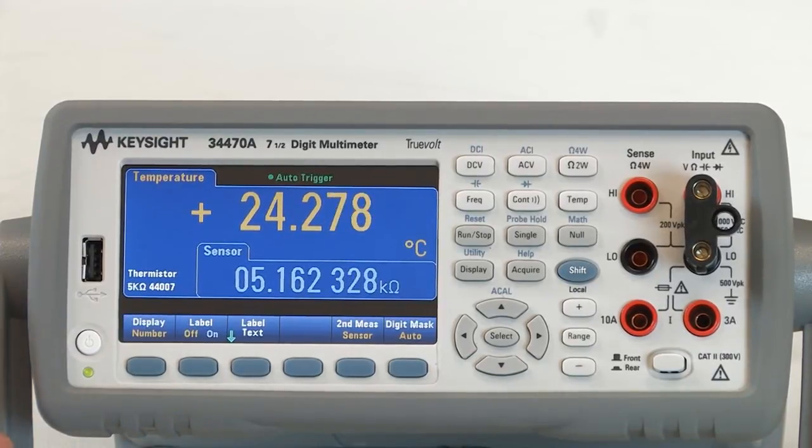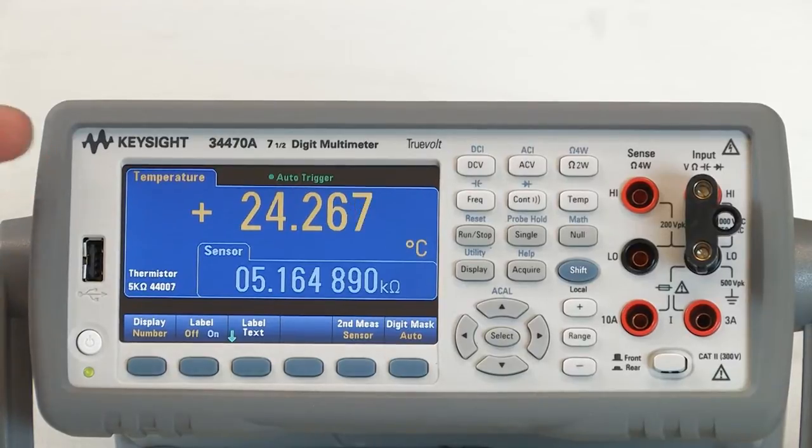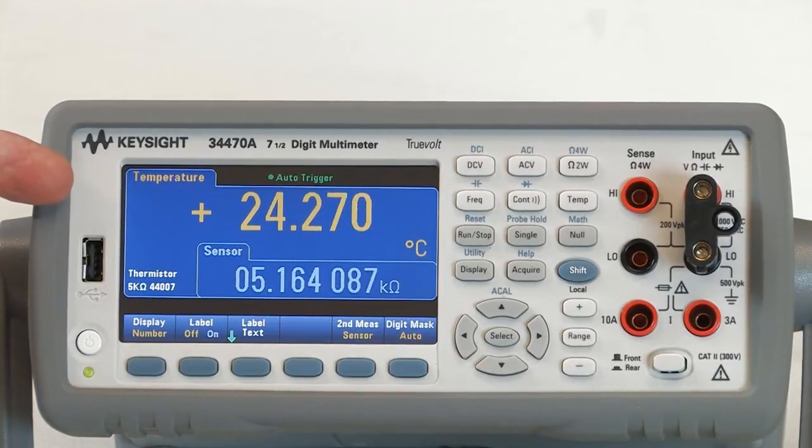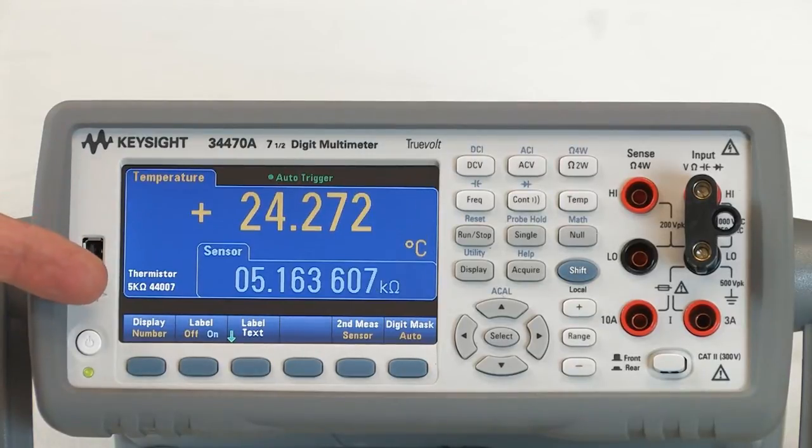As you can see, the display changes such that now we can measure both concurrently, the temperature of the temperature measurement, as well as the raw resistance measurement of the sensor itself.